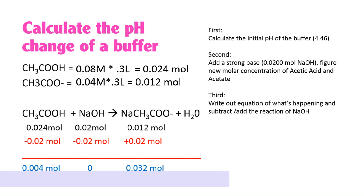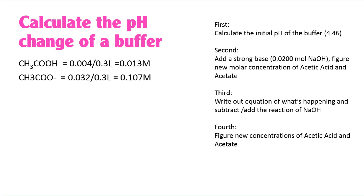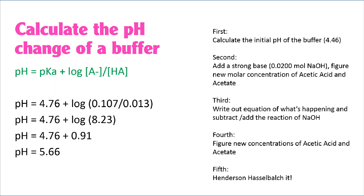Now get the molarity of acetic acid and acetate by dividing by 0.3 liters. Acetic acid: 0.013 molar. Acetate: 0.107 molar. Plugging into the Henderson-Hasselbalch equation: pH equals 4.76 plus the log of 0.107 divided by 0.013. The new pH is 5.66. With a buffering capacity of one unit above and below the pKa, this is at the upper range of buffering capacity. Adding much more strong acid would cause the buffering ability to be lost.